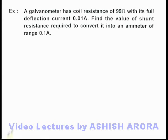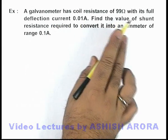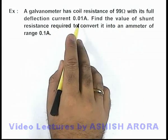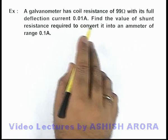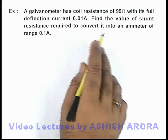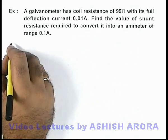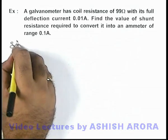In this example, we are given that a galvanometer has coil resistance of 99 ohms with its full deflection current 0.01 ampere. Here we are required to find the value of shunt resistance required to convert it into an ammeter of range 0.1 ampere. We know well that...